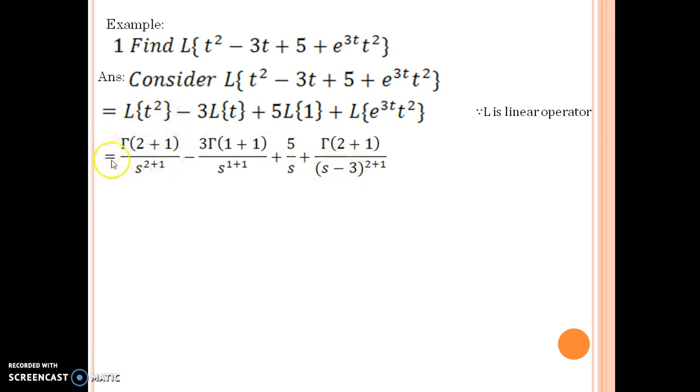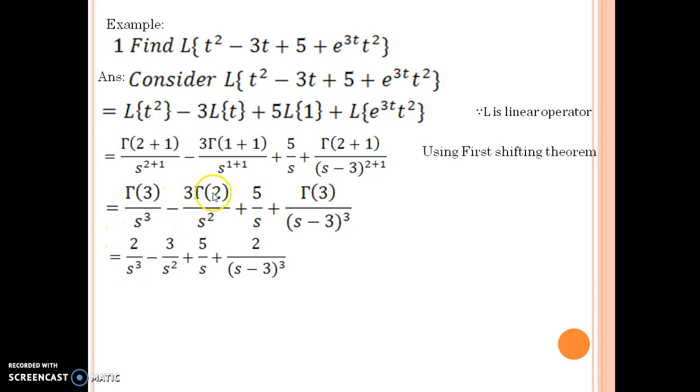You replace in this Laplace s by s - a, and so that would be the answer of Laplace of e^(3t)·t². You can give the reason using first shifting theorem. No need to mention the corollary, it is one and the same. We simplify it further and write down the values of Γ(3) and Γ(2).